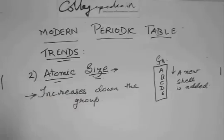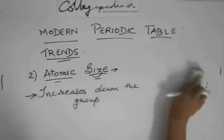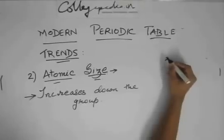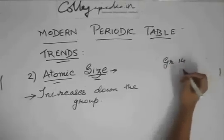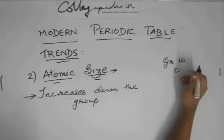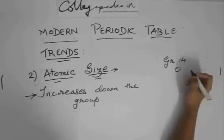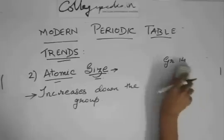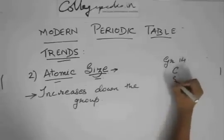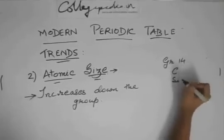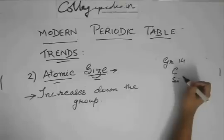On this, they give you simple questions like, suppose this is group 14. In group 14, you have carbon and then you have silicon. They will ask you, which of these, whose atomic size would you expect to be more?